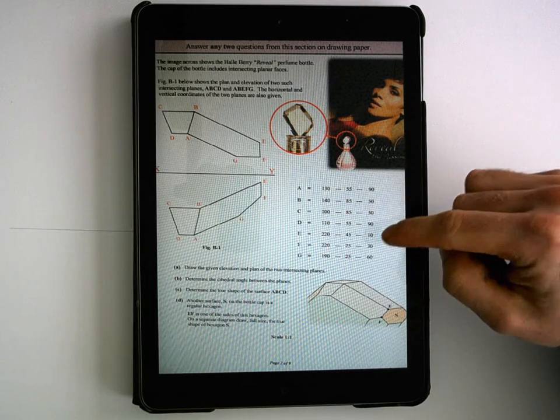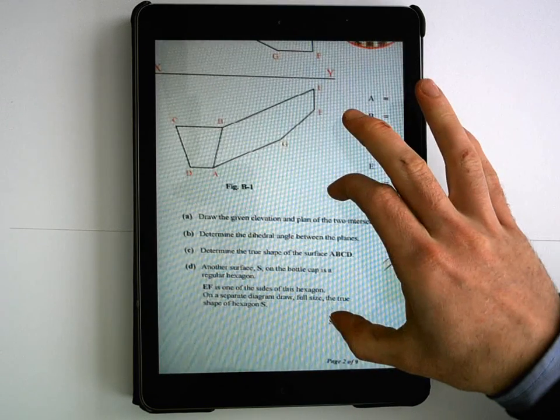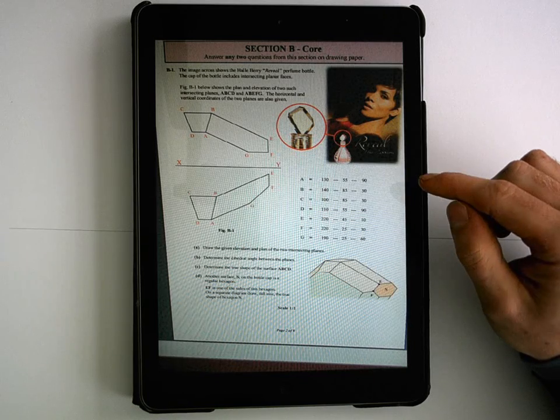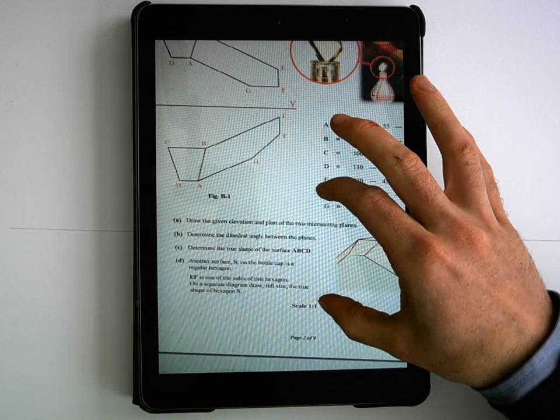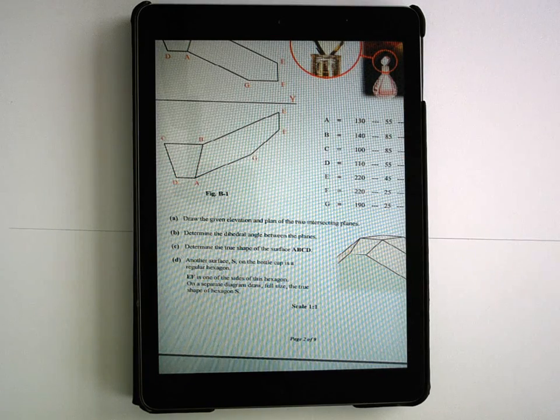No measurements missing, so no problems there. Looking at what the makeup of the question is, it's based on the head of a perfume bottle, a partial section of it. First thing they ask you is to draw the elevation and plan using those coordinates, so that's pretty straightforward.